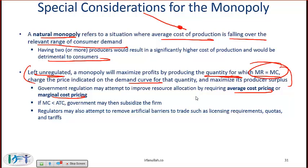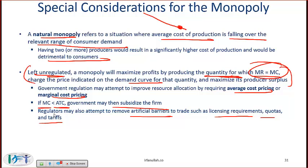Average cost pricing is where the regulator says your price has to equal average cost. Marginal cost pricing is where the regulator says the price must equal marginal cost. If marginal cost is less than average total cost, the government may need to subsidize. Regulators may also attempt to remove artificial barriers to trade such as licensing requirements, quotas, and tariffs, to break down a monopoly created by those barriers.